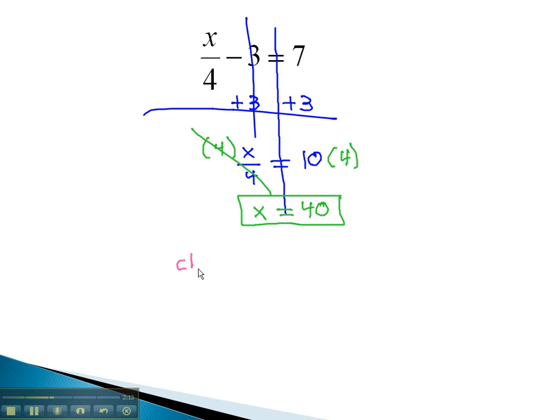We can verify that answer by checking it, replacing the x in the original equation with our 40. x, or 40 over 4 minus 3, is that really equal to 7? Now, because we're simplifying, we'll follow order of operations, dividing first. 40 over 4 is 10 minus 3. Is that really equal to 7? Yes, it is equal to 7. That checks, which tells us our answer of 40 is the correct solution.